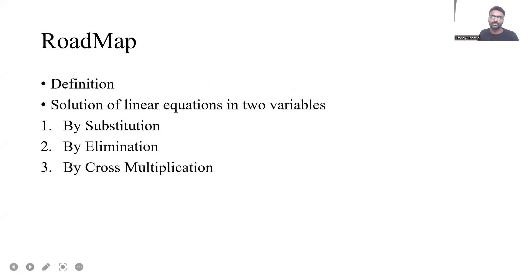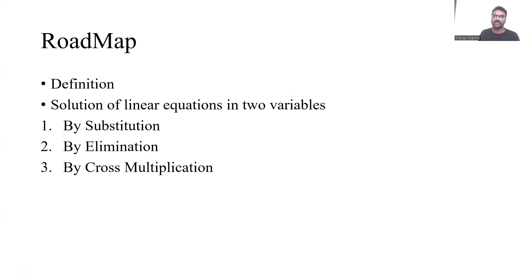This is how our roadmap is going to look like. First, we'll be dealing with the definitions part — why we call this linear, what an equation signifies, and why it is known as a linear equation in two variables. Then we'll talk about the solution part — three methods: by substitution, by elimination, and by cross multiplication method — and I'll be discussing these one by one.